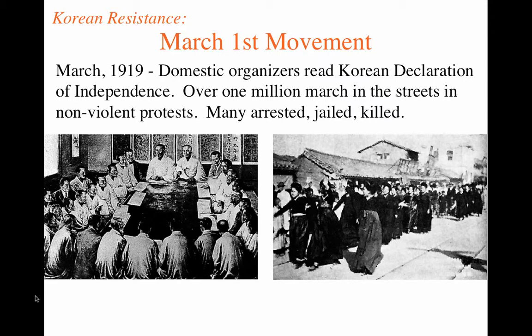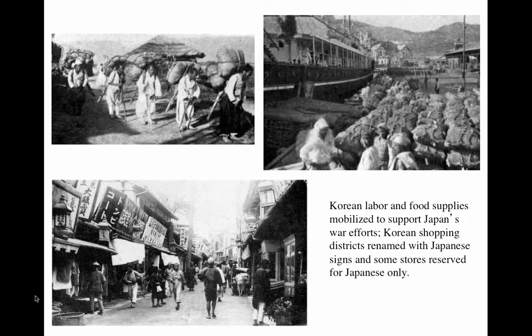The March 1st Movement in March of 1919 saw domestic organizers read a self-written Korean Declaration of Independence. Most estimates agree that probably over a million people marched in the streets, many chanting manse — a term meaning Korea lives for ten thousand years. The Japanese responded to these non-violent protests with suppression that was violent in some cases; many were arrested, jailed, or even killed.